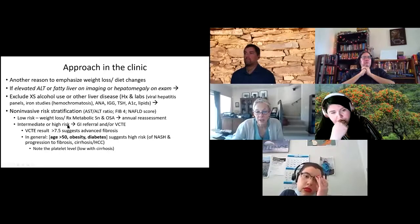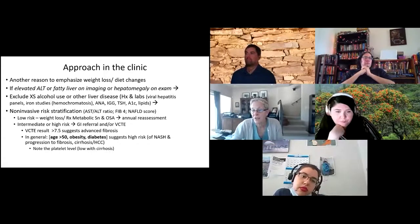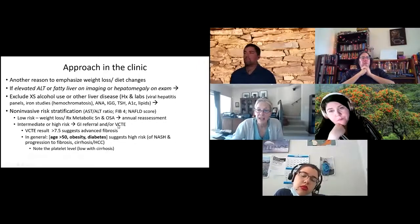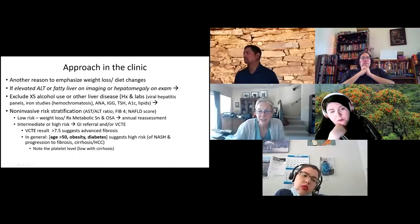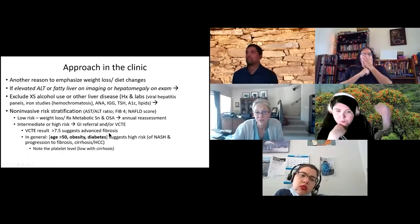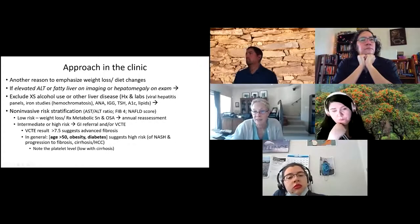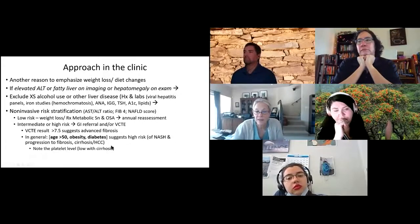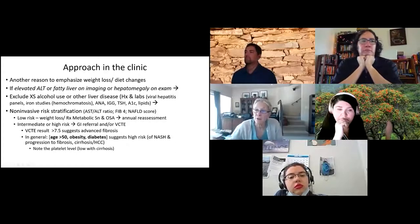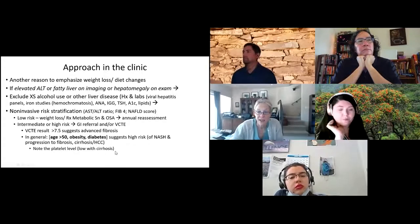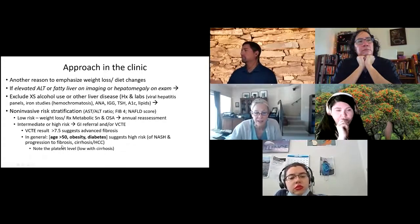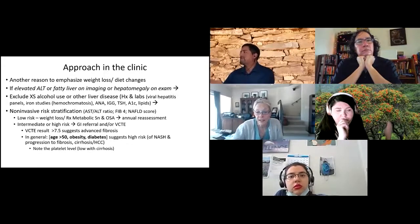If they have intermediate or high risk, GI referral is suggested. There's an ultrasound test — fibroscan — that measures fibrosis in the liver; it's fairly inexpensive and accurate. A score over 7.5 suggests advanced fibrosis. High risk would be age over 50, obesity, and diabetes. Also, low platelets are a good indicator the patient has developed cirrhosis, so tracking platelet trends is a useful, inexpensive approach.